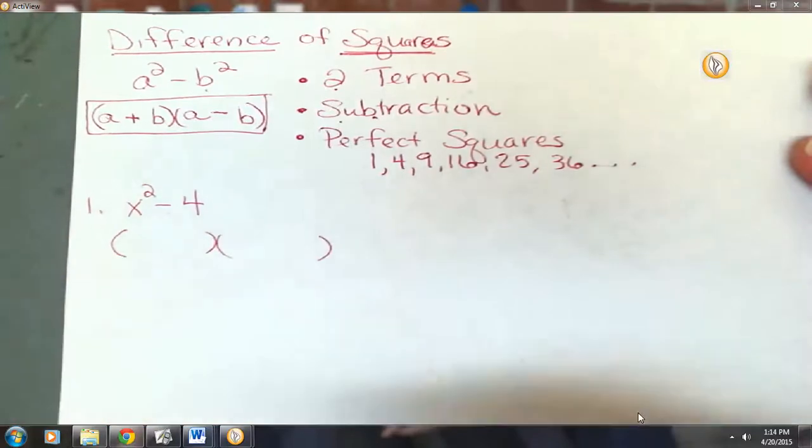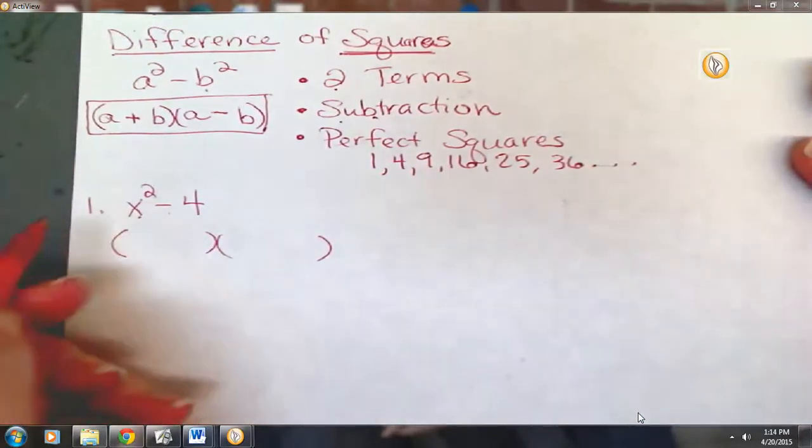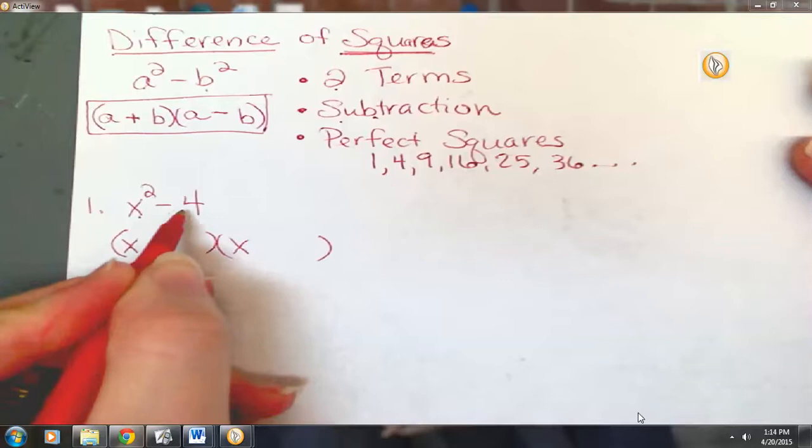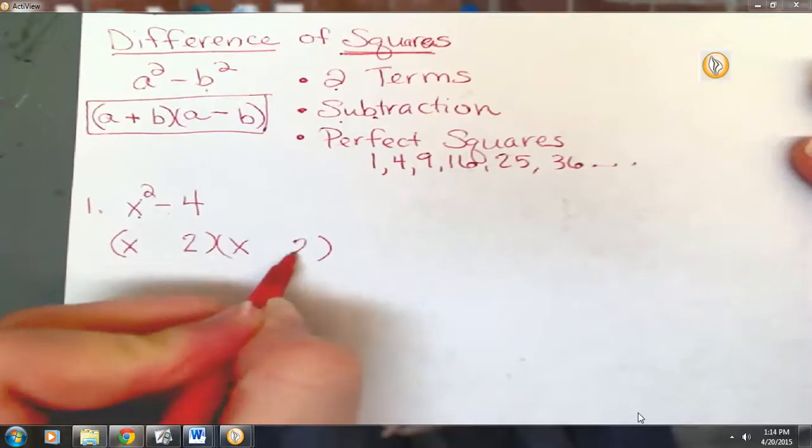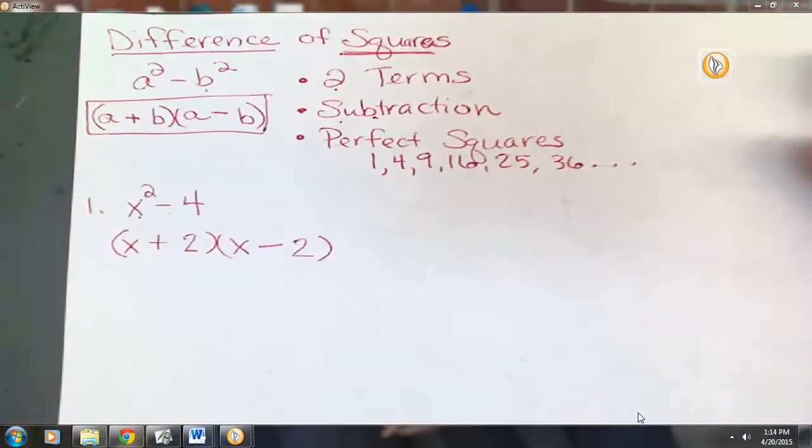So two parentheses. What's the square root of x squared? X. And the square root of 4 is? 2. 2. So x plus 2, x minus 2.